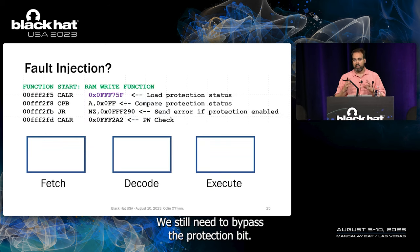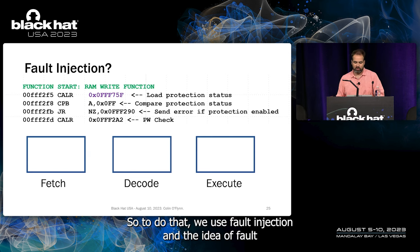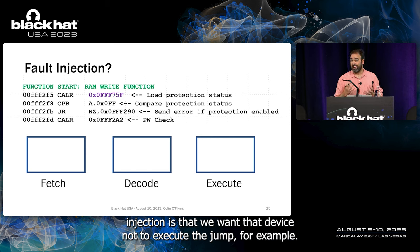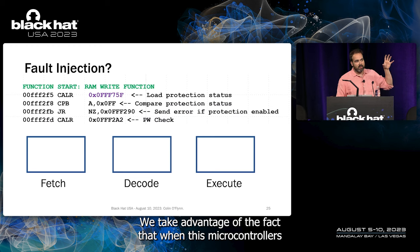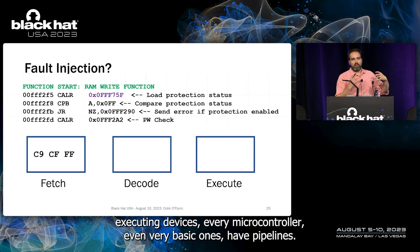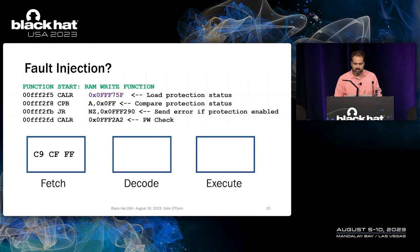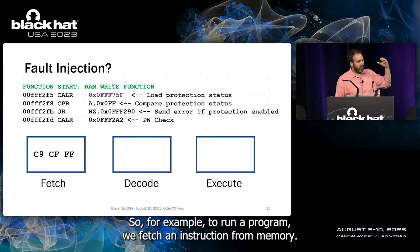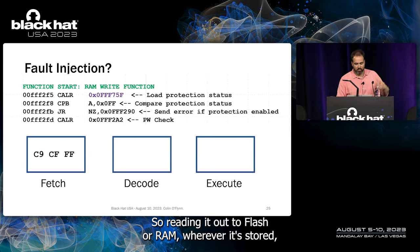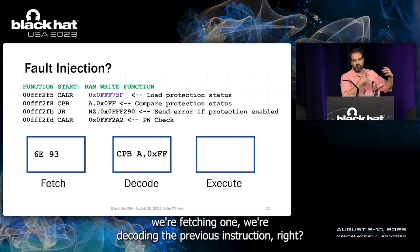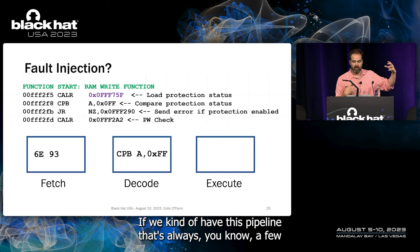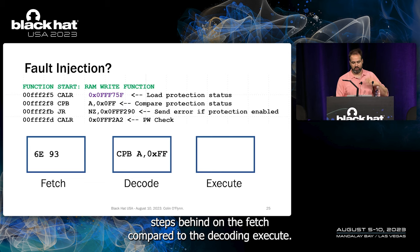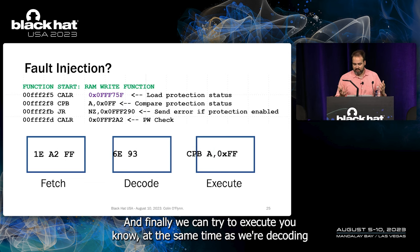That gives us the password, but we still need to bypass the protection bit using fault injection. We want the device not to execute a specific jump. Microcontrollers, even very basic ones, have pipelines: on a single clock cycle you're fetching one instruction, decoding the previous, and executing an earlier one simultaneously. The pipeline uses registers — flip-flops — and these are clocked on a common low-skew clock network. Between clock edges, logic processes data, and this defines maximum clock speed.